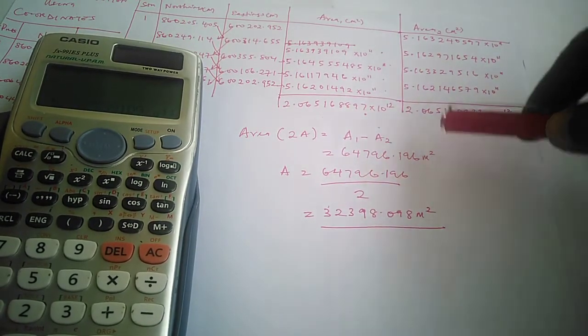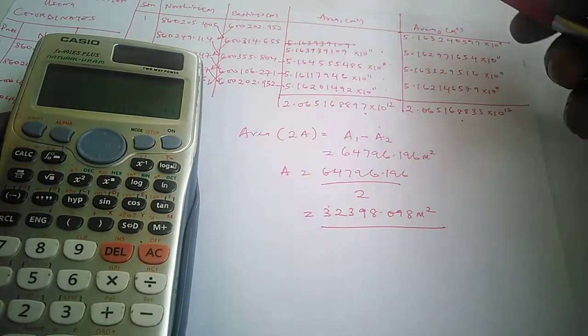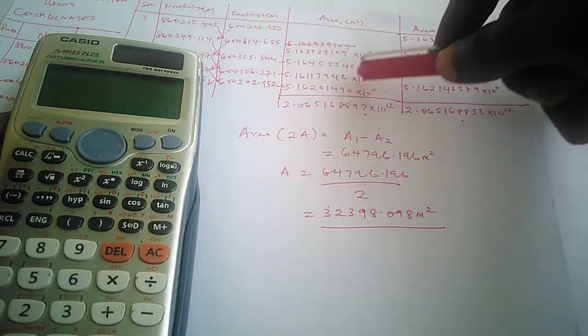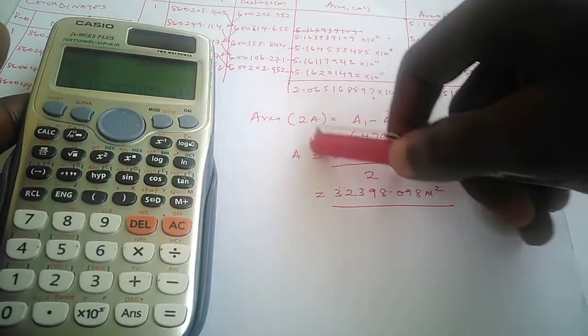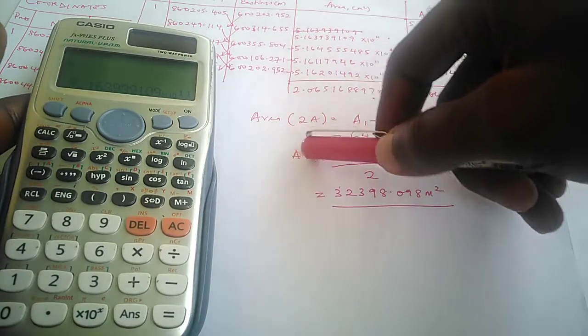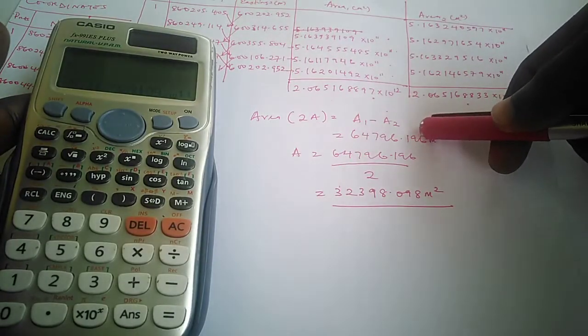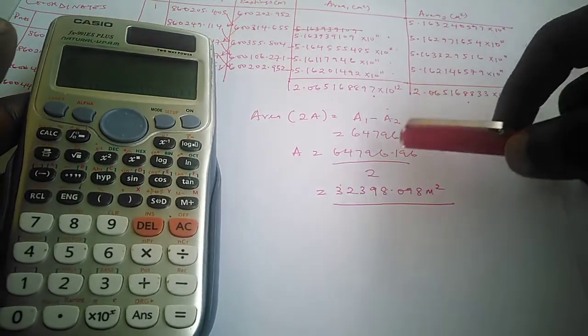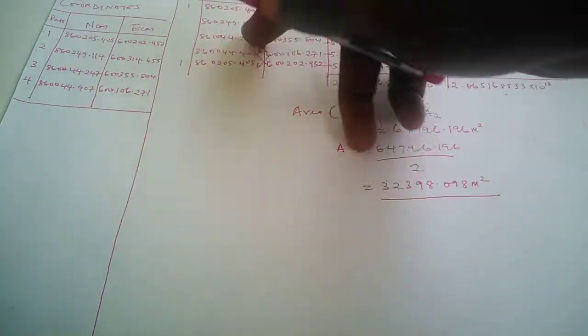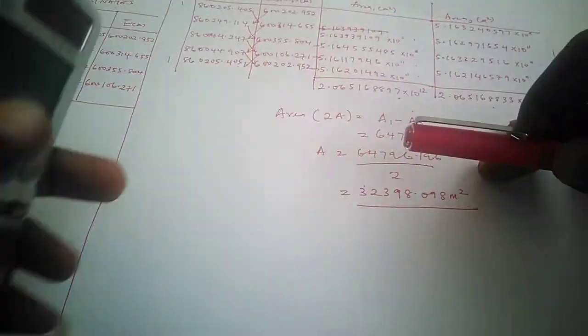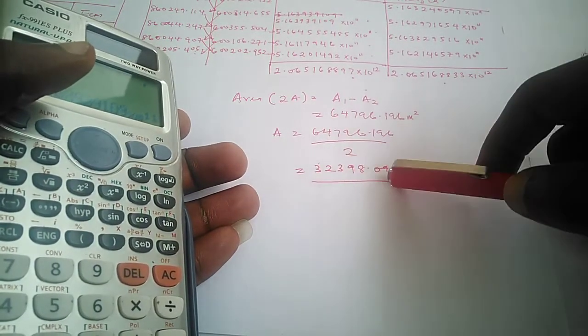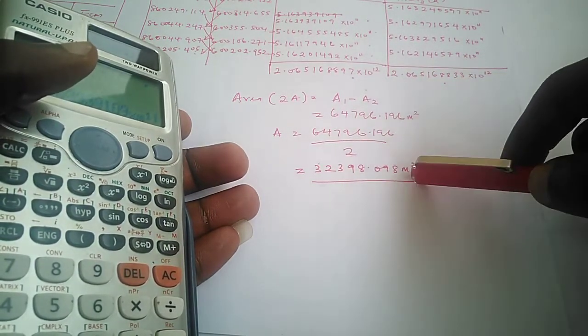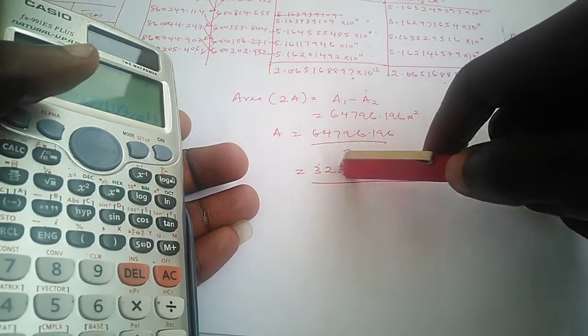By the time you find out their difference, you get something like 64796.196. What we need is the area, not two times the area. The reason why we have two times the area is because of these two partial areas. By the time we find their difference, we say area divided by two. Area will now be this difference we have divided by two. Therefore, the area covered by these four points on site is actually 32,398.098 square meters.